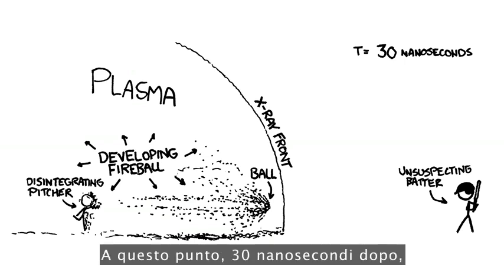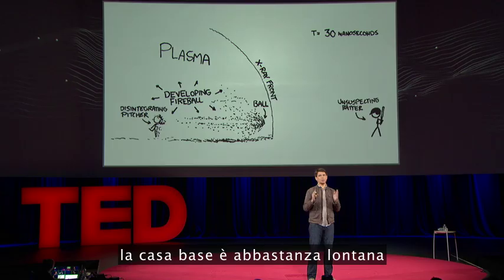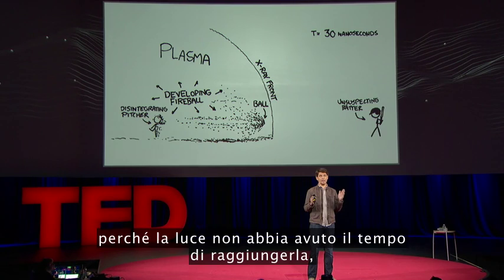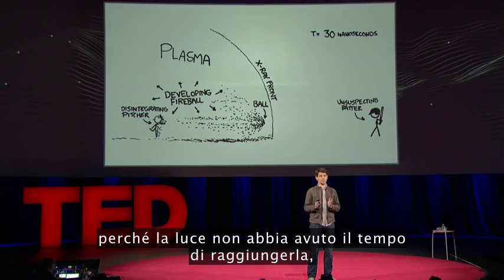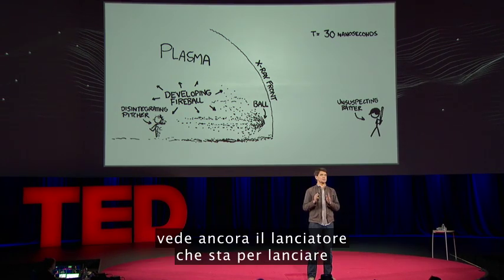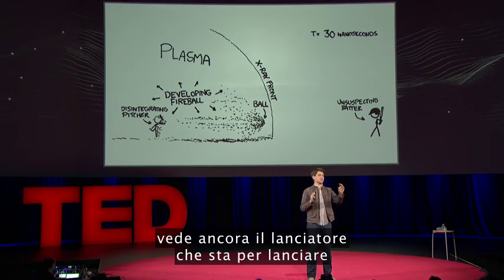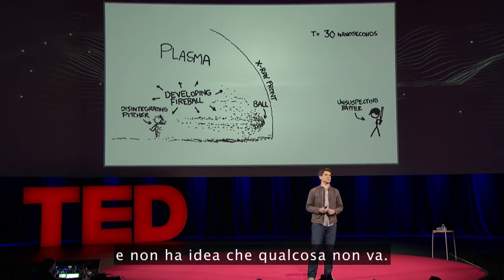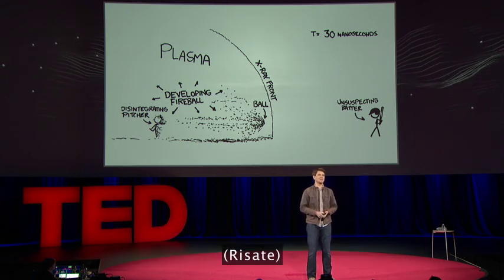About 30 nanoseconds in, the home plate is far enough away that light hasn't had time to reach it, which means the batter still sees the pitcher about to throw and has no idea that anything is wrong.